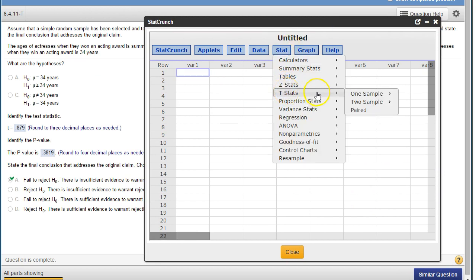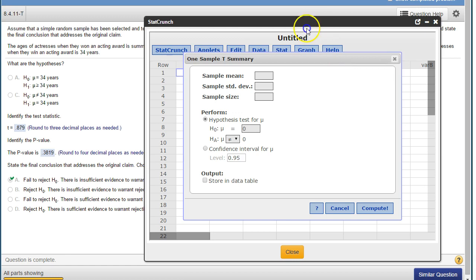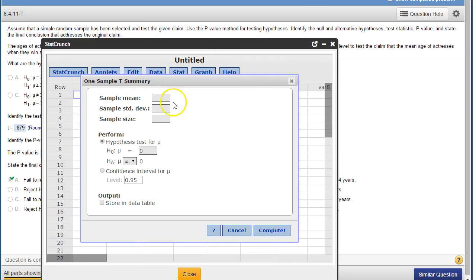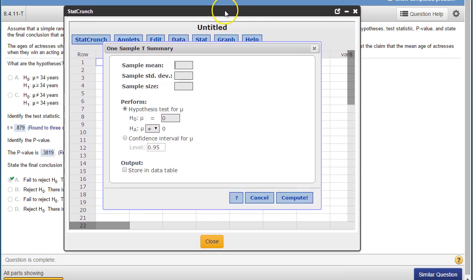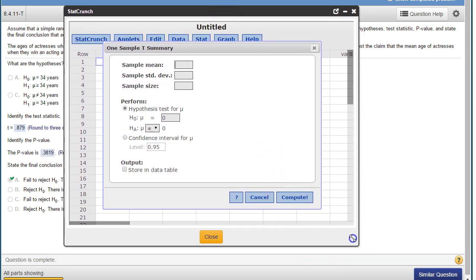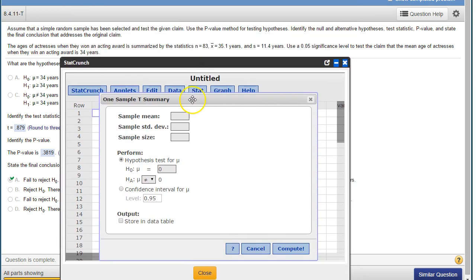Again, it's t because we don't know the population standard deviation. And we have a summary. We don't have a data set. So the sample mean was 35.1. Let me move down a little further. 35.1.